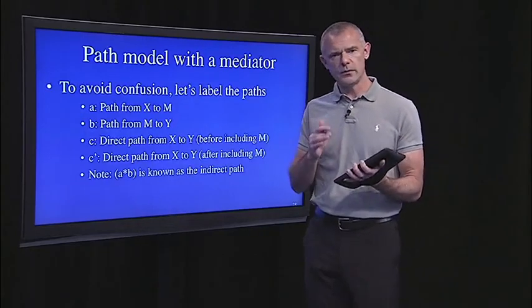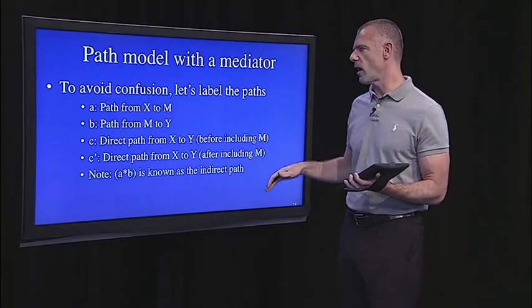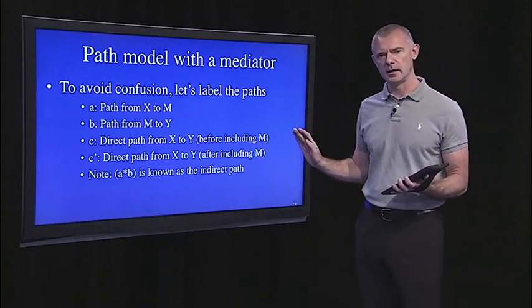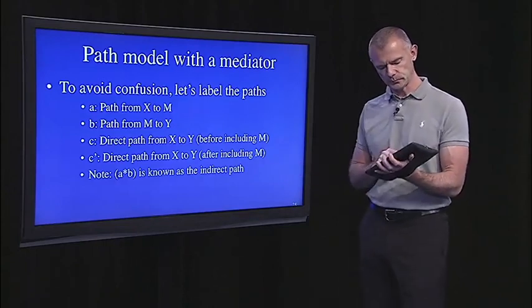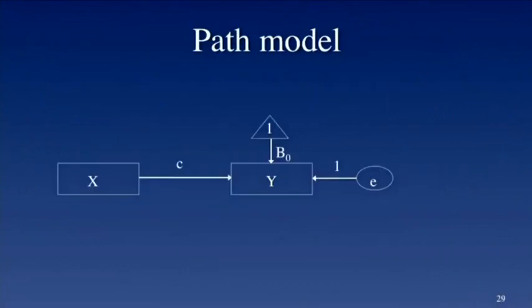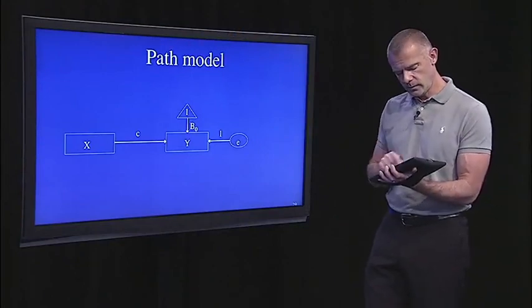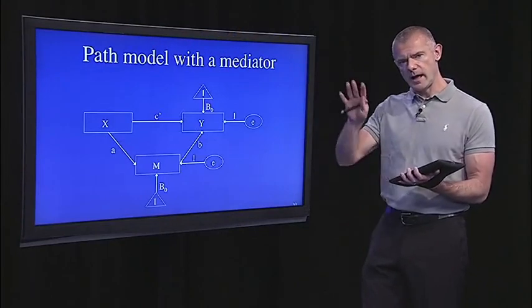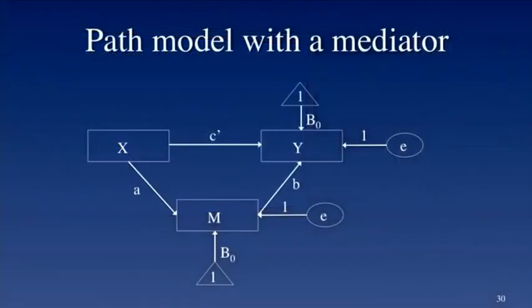To avoid confusion, because we have multiple regression equations going into this model, let's just label the paths. This is a common technique in path analysis and modeling. I'll just label the paths with these letters, and then we can look at the path models again. Here's the simple equation. I just use C for the direct effect of X on Y. And then, when M is entered in the equation, I'll change that to C prime, just to make the distinction.